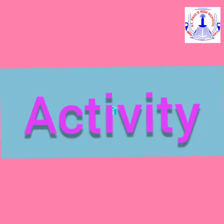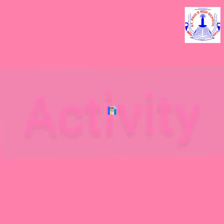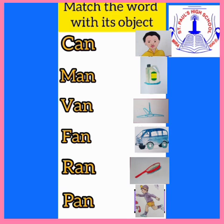Very well done. Children, now we will have the activity with three-letter words. Here is the worksheet of matching the word with its object. We have the three-letter words on the left-hand side and the object on the right-hand side. We will read the words loudly and match the object.